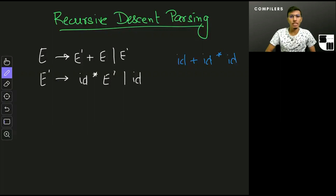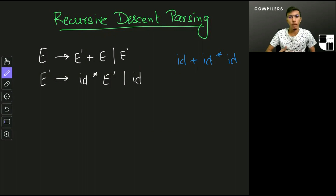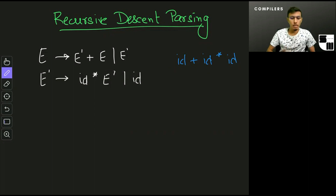Hi and welcome back. In this video we'll start talking about parsing algorithms, and the first algorithm we'll talk about is recursive descent parsing. Recursive descent parsing is also called the brute force parsing algorithm, and it involves some backtracking. When trying to construct the parse tree, we try each production one by one — if it works we proceed, if it doesn't we backtrack and try a different production. That's how the recursive descent algorithm works.